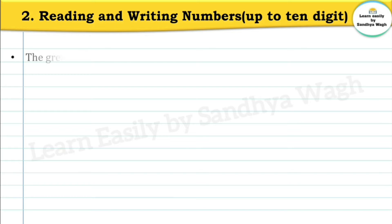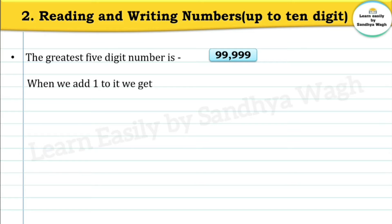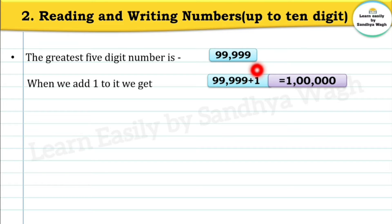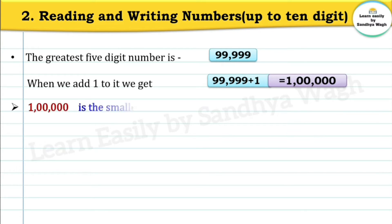The greatest five-digit number is 99,999 — five nines. When we add one to it, we get one followed by five zeros. 99,999 is the greatest five-digit number, and when we add one to it, we get the smallest six-digit number: one followed by five zeros.